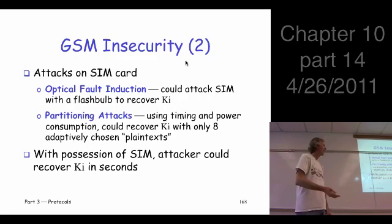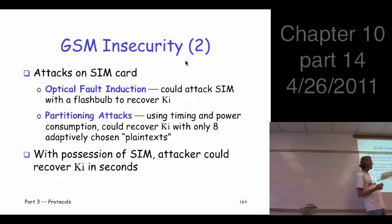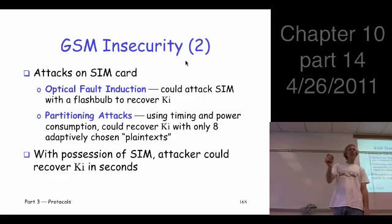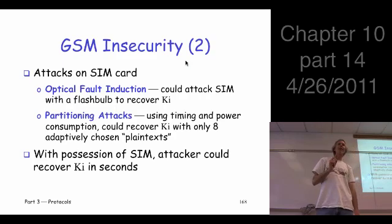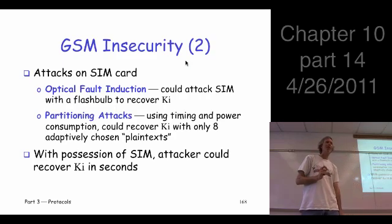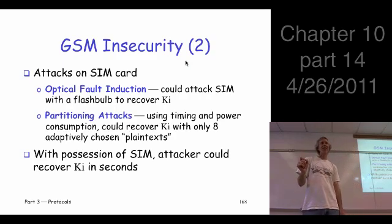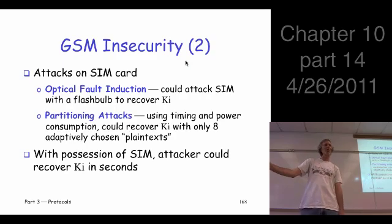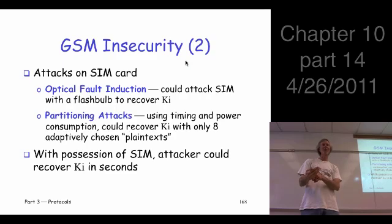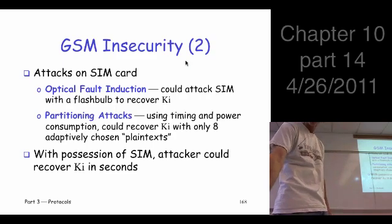Some of those SIM card attacks were pretty fast — some only took eight chosen plaintext pairs. This is not 160,000; this is eight. That means if you lose your phone for a couple of minutes, somebody could have figured out what the key is in that short a time.